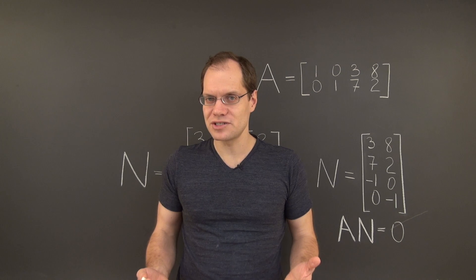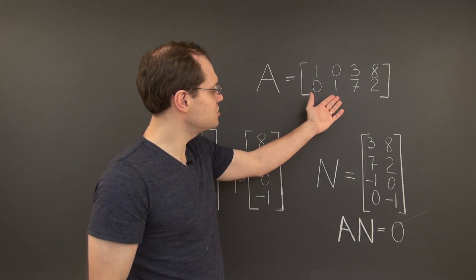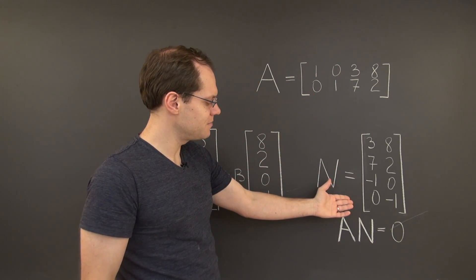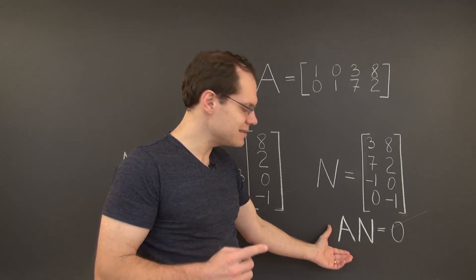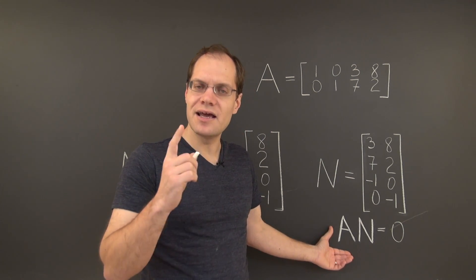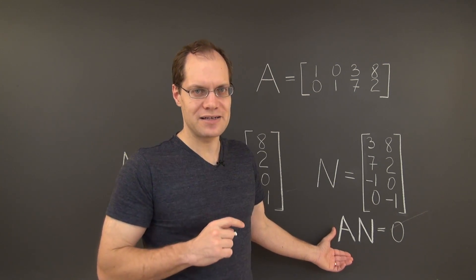So what we decided to do was to combine the elements of a basis of the null space into a matrix. And the advantage of this new notation was that the relationship between the matrices A and N can be captured with a very compact and elegant algebraic identity, AN equals 0. And that's a great advantage.